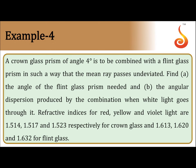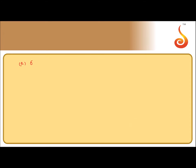First we calculate the angle of the flint glass prism. The deviation produced by the crown glass prism is given by δc = (μ − 1)A, and similarly the deviation produced by the flint glass prism is given by δ'= (μ' − 1)A'.